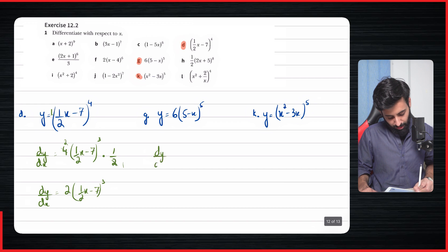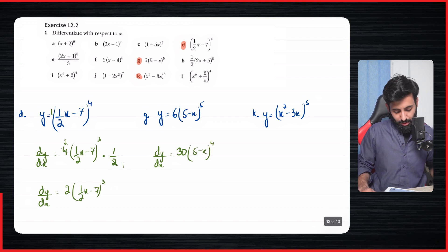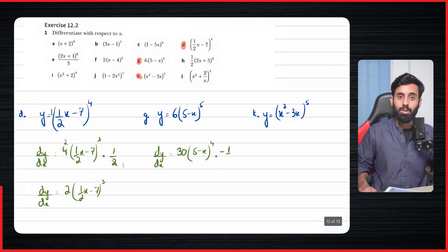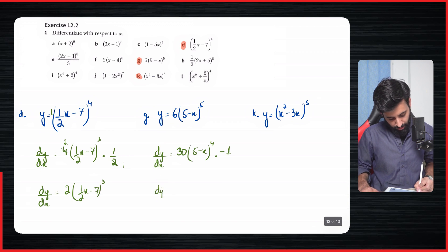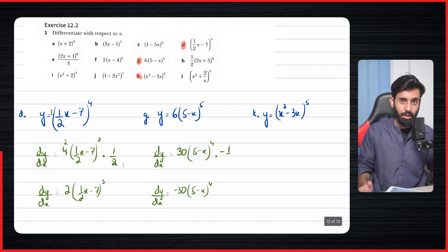For part g, dy/dx: 5 times 6 is 30, so we have 30(5 − x), the power reduces by one to become 4, multiplied by the differential of the expression inside the bracket which is −1. So the final answer is dy/dx = −30(5 − x)⁴. I encourage you to attempt the rest of the questions and check your answers.